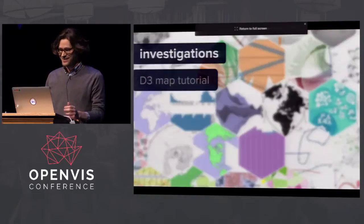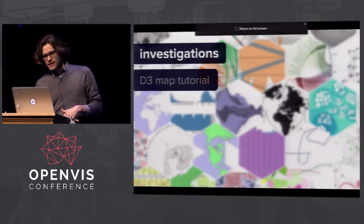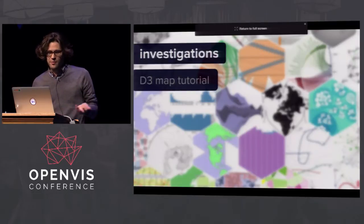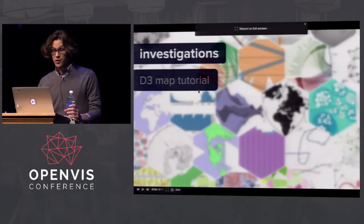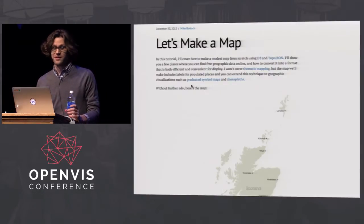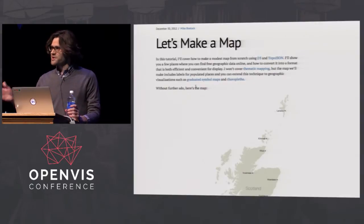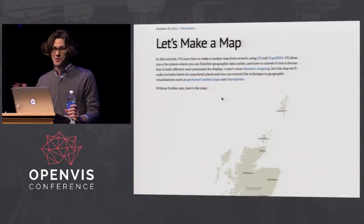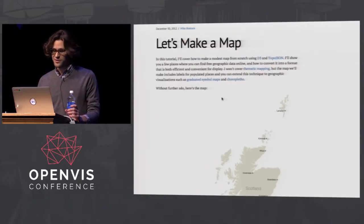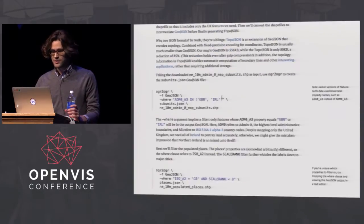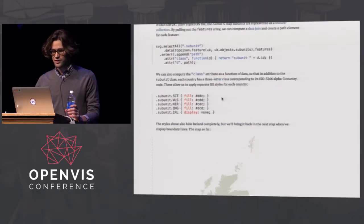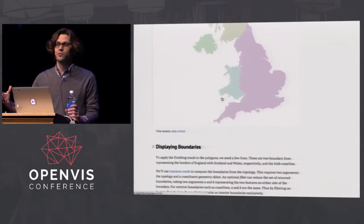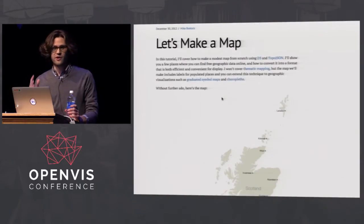I did some Googling and found this kind of obscure library called D3, and a great tutorial written by Mike Bostock called 'Let's Make a Map.' It goes step by step for someone who doesn't know anything about coding in JavaScript, geographic data, or D3. This was a huge kick forward for me to have found this library and this tutorial.